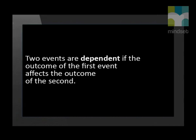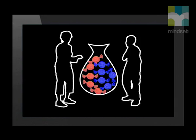Two events are dependent if the outcome of the first event affects the outcome of the second. Think of two friends sharing a bag of ten sweets — five are red and five are blue, so there is an equal probability that red or blue sweets will be chosen. If the first friend takes three red sweets and eats them, she has changed the probability of the second friend's choice. It is now more probable that the second friend will choose a blue sweet. The probability changes with every sweet chosen as the total amount decreases, and each event depends on the outcome of the previous event.